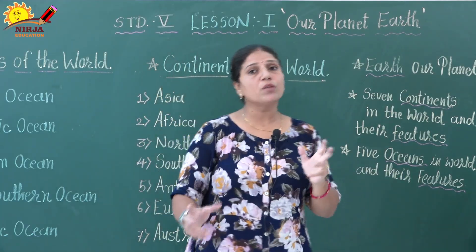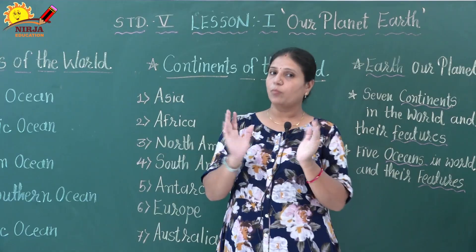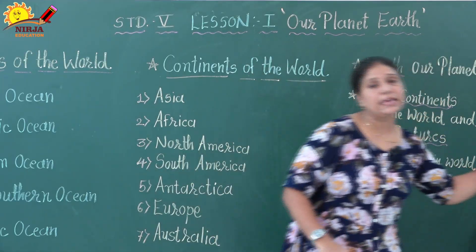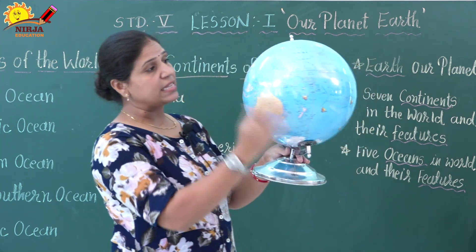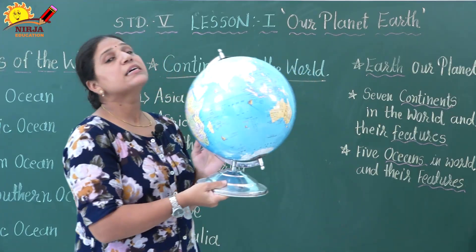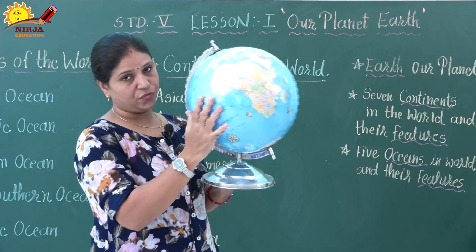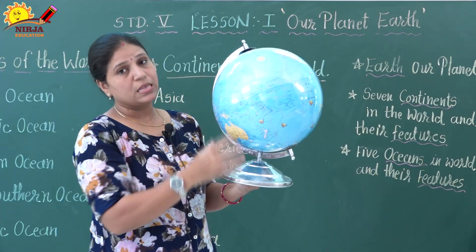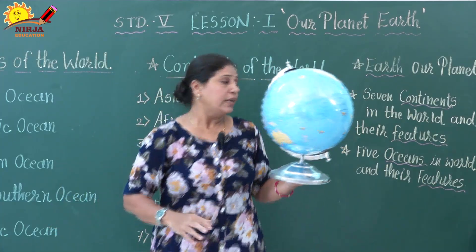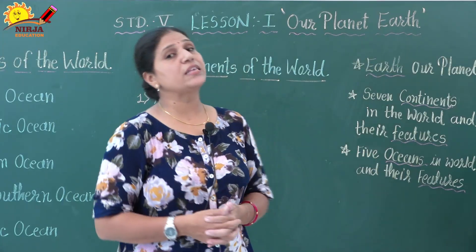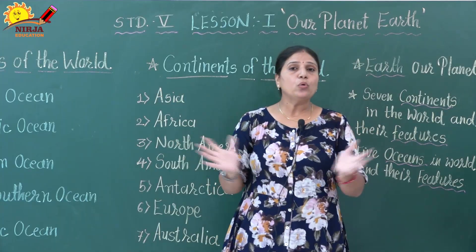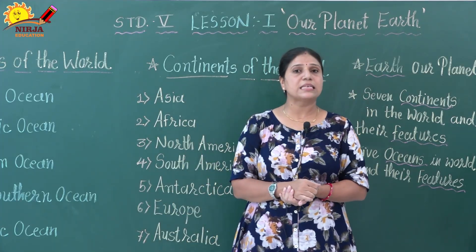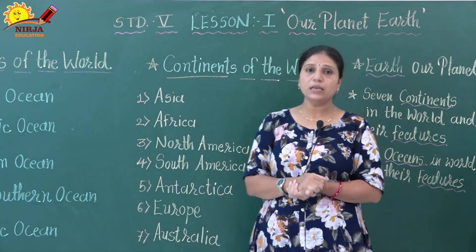Dear students, have you observed the globes? It looked like a blue bowl. Have you seen that the surface of the globe — the bluish part is the water surface. Rather than this blue colour, we can see other colours which are landforms — that is the part of land. The water surface looks blue because of the sky appears on it, and the large land masses on the earth are called the continents.